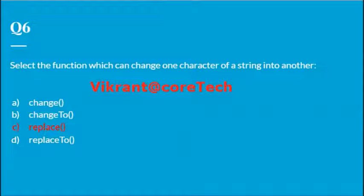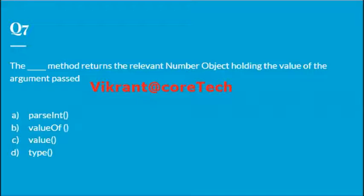So let's go for question number seven. I'm waiting for the correct answer for this one also. The blank method returns the relevant number object holding the value passed as an argument. The definition itself says that parseInt is used for converting. There is no function like value and there is no function like type. So the answer is valueOf, correct, valueOf.